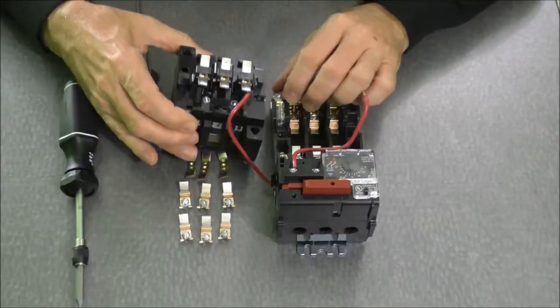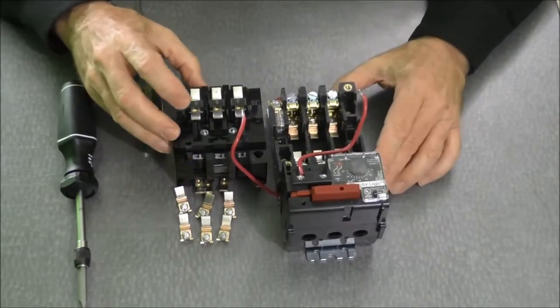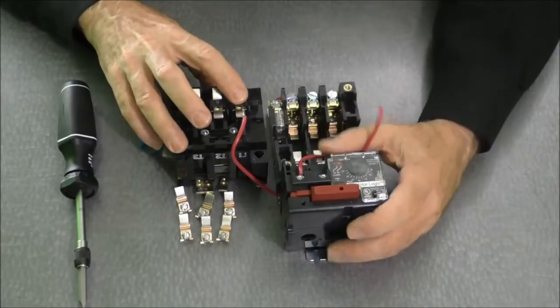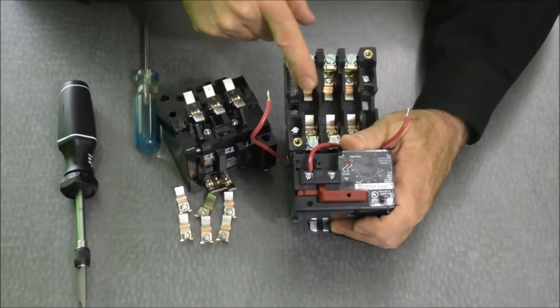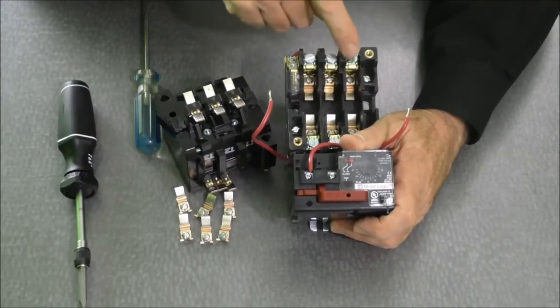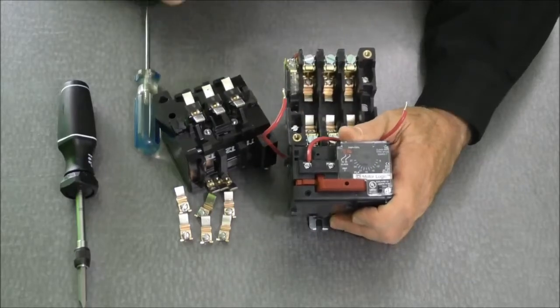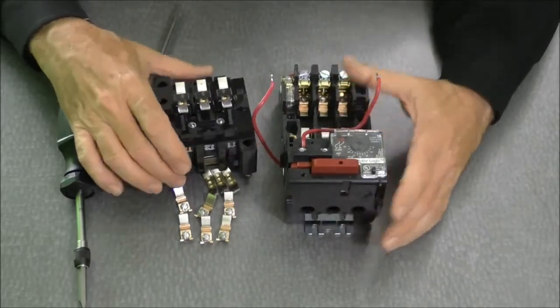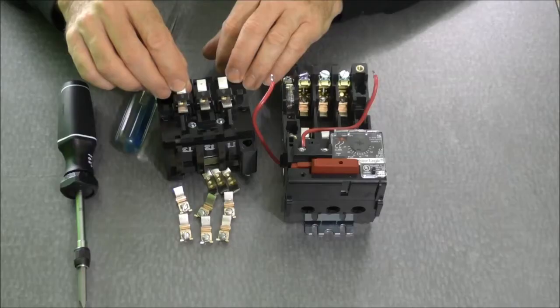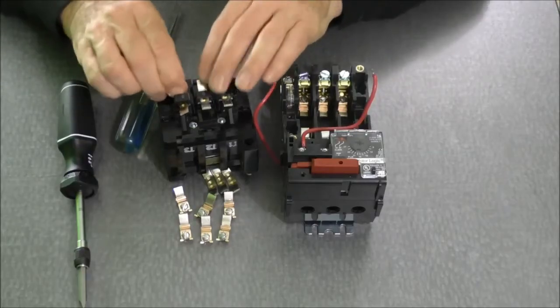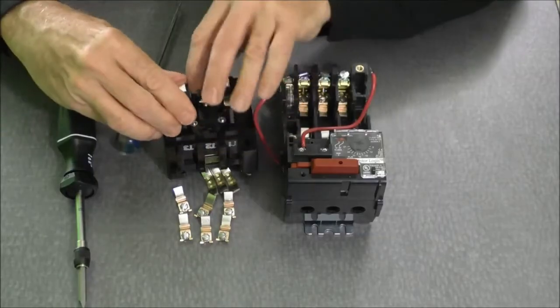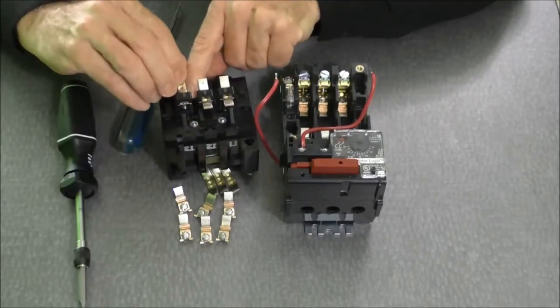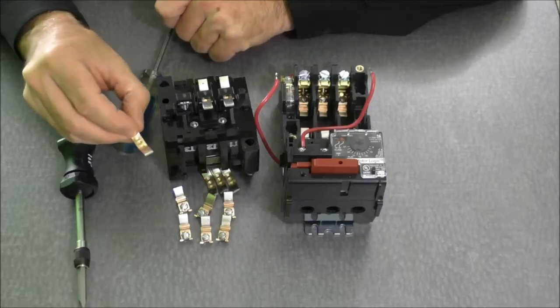So right here I have my six movable contacts and in the bottom of the contactor itself we have six stationary contacts. So we'll begin to remove those by taking off the terminal and bringing off the contact.